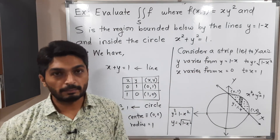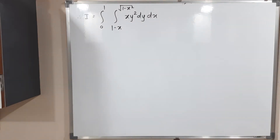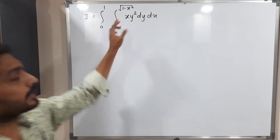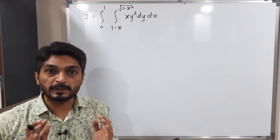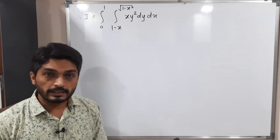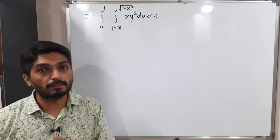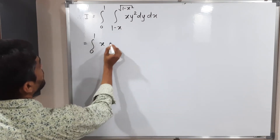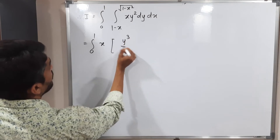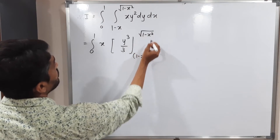Now consider the double integration and solve it. With the function x·y² and the strip parallel to the y-axis, we write dy dx — meaning we integrate with respect to y first, then with respect to x. For the inner integral with respect to y, all functions of x come outside. So x comes outside: integration from 0 to 1 of x times [y³/3] evaluated from (1 minus x) to √(1 minus x²), dx.